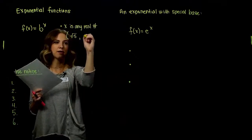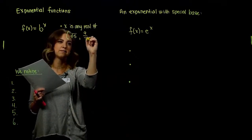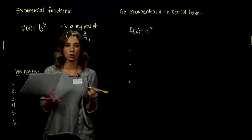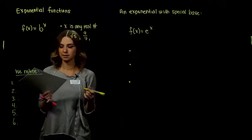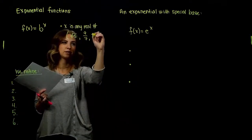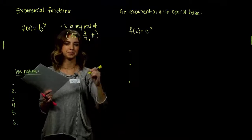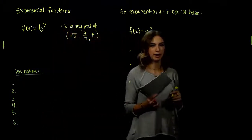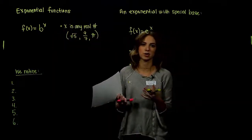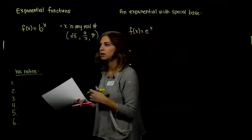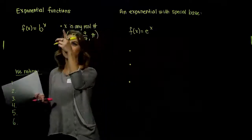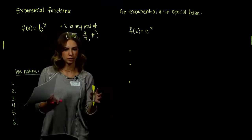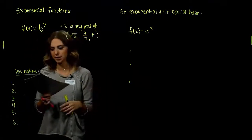The exponent x can be fractions like 9 sevenths, quotients, or even something completely irrational like pi. That variable x can be any real number — it just can't be imaginary.